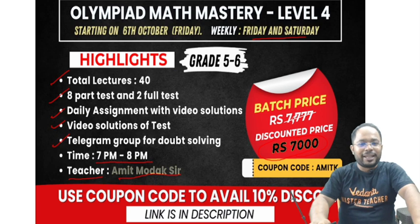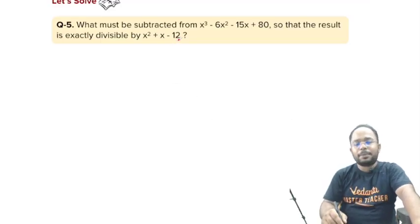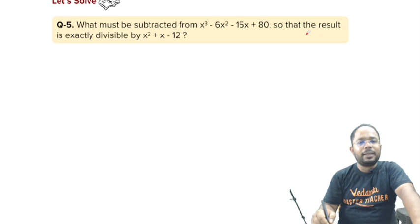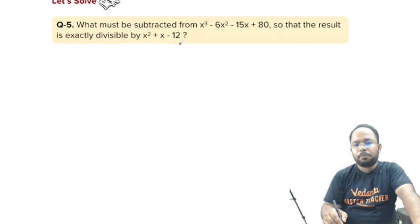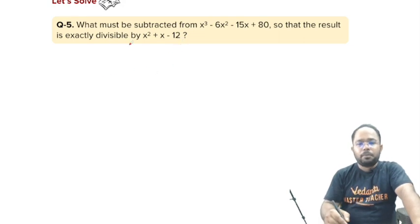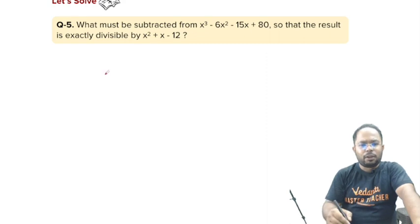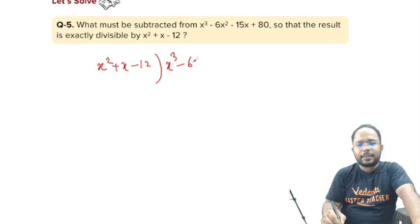Moving on students to the next question. What must be subtracted from x³ - 6x² - 15x + 80, so that the result is exactly divisible by x² + x - 12? Let us solve it. x² + x - 12, now what we will do, we will divide it, x³ - 6x² - 15x + 80.